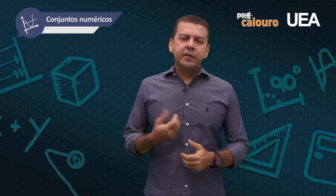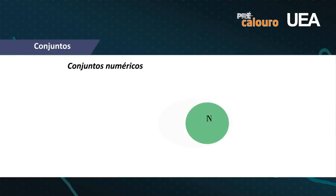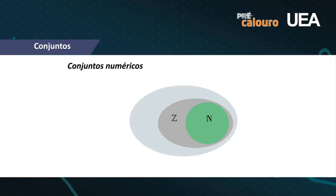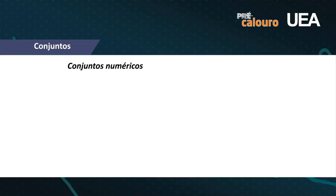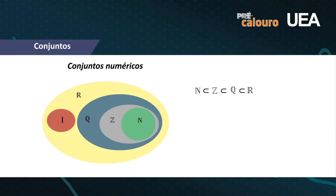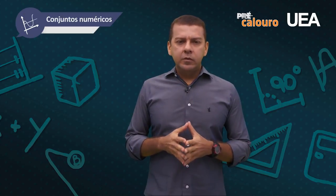Esse diagrama facilita a percepção da relação de inclusão entre os conjuntos. Temos uma bolinha mais interna representando os números naturais, que está dentro do conjunto dos inteiros, que por sua vez está dentro do conjunto dos racionais. Uma vez que o número não é racional, passa a ser irracional. A união dos racionais com os irracionais forma os números reais. Assim, a relação de inclusão diz: N está contido em Z, Z está contido em Q e Q está contido em R.